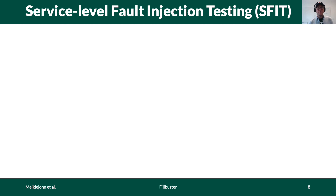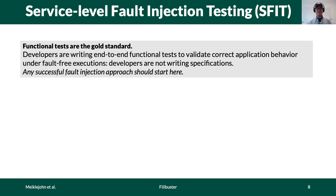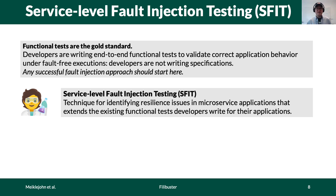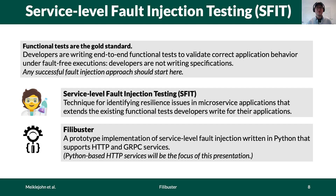During the construction of our corpus, we made one important observation: functional tests that exercise end-to-end behavior without faults are being written by developers and used as part of their chaos engineering experiments. Developers are not writing system-wide specifications, so we felt that any successful fault injection approach should start here. Our technique, service-level fault injection testing, takes those existing functional tests and extends them from being fault-free to considering all possible faults that might occur in their microservice application. We've also built a prototype implementation called Filibuster that can operate on Python services communicating using HTTP or gRPC.